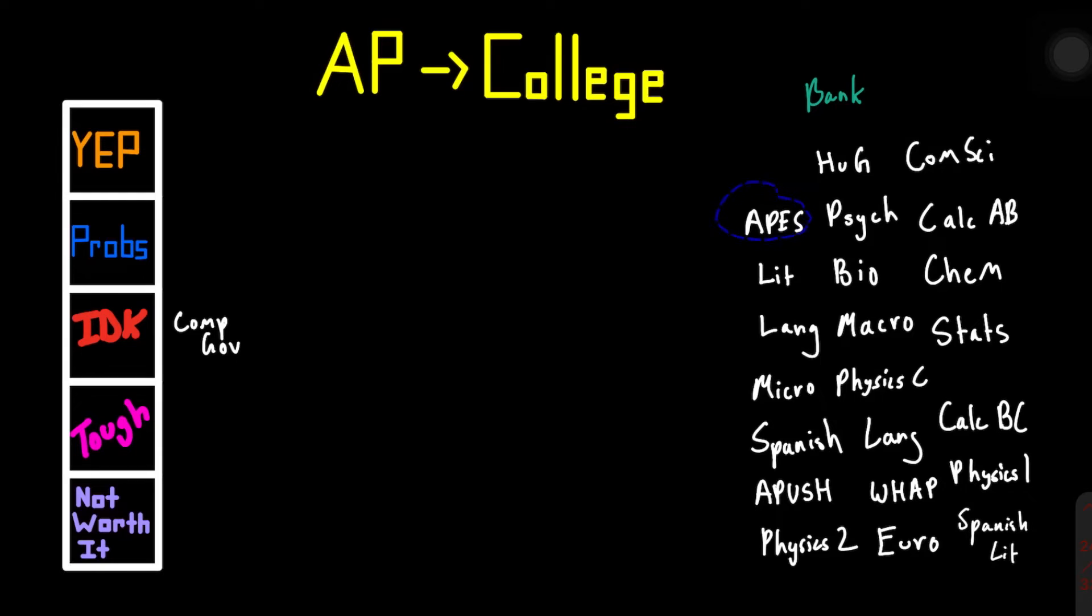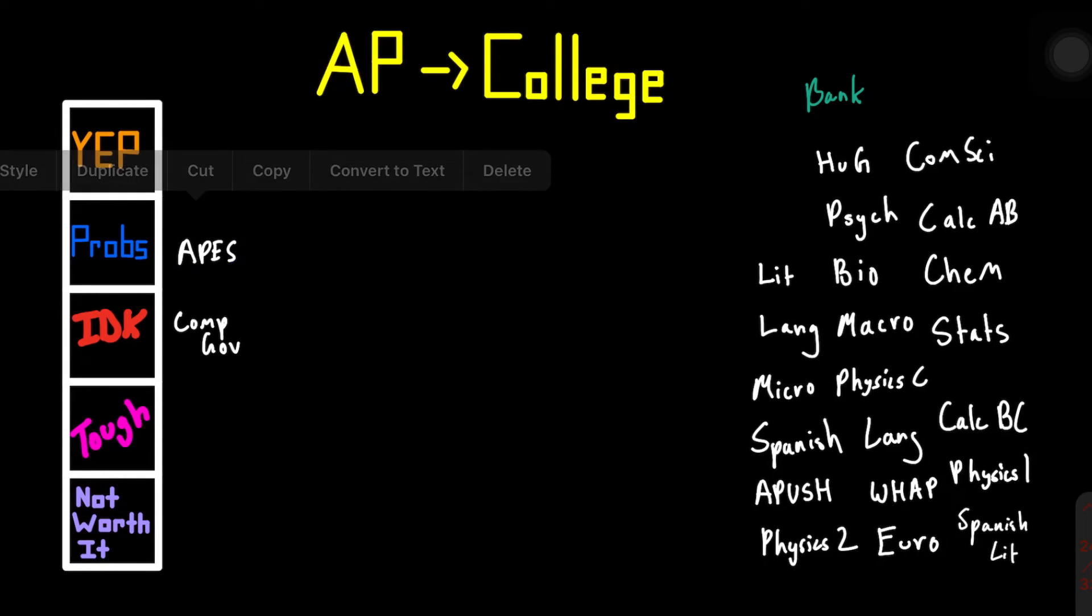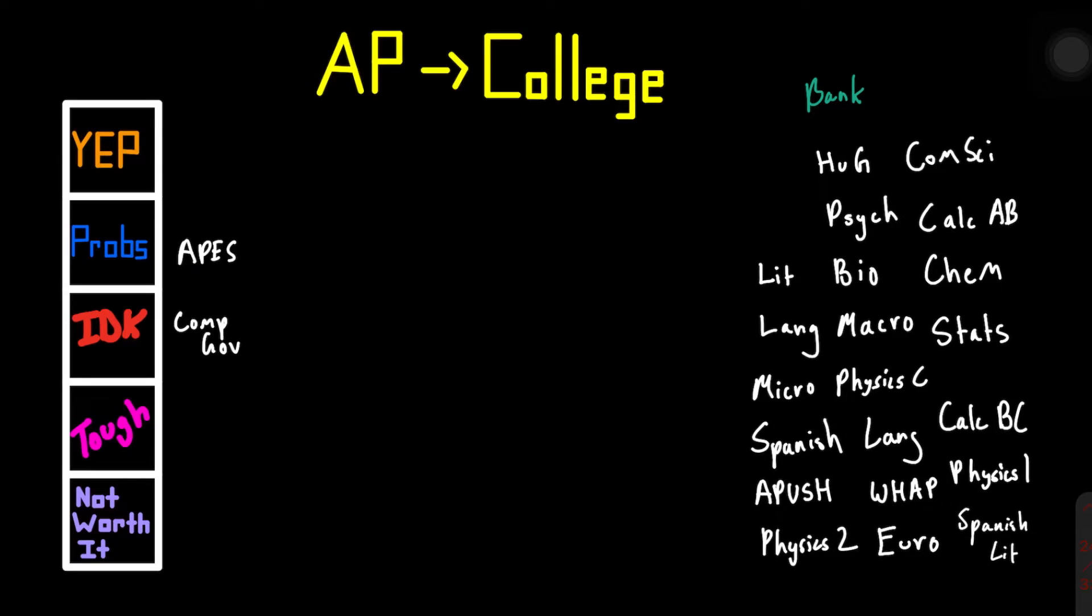Next, we have APES, AP Environmental Science. I'm going to go ahead and say that's a probably. Most colleges require a science credit of some kind and APES is a pretty easy exam to take. I got a four on this exam myself. So it did count for credit. Oh, by the way, you do need to be passing these exams. And to keep it safe, always go for the five. If you happen to get a four, that's okay. Threes are a bit iffy on credit transfers.